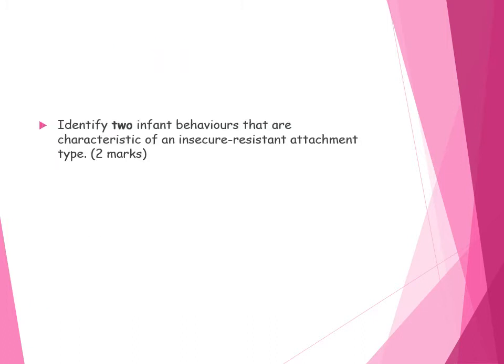Practice question: identify two infant behaviours characterised by insecure resistant attachment. Examples include: less likely to explore, mother doesn't act as a secure base, quite clingy behaviour, resisting comfort upon reunion, getting very distressed when the mother leaves, and showing considerable separation and stranger anxiety. Just two of those would suffice.